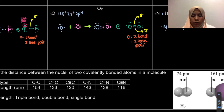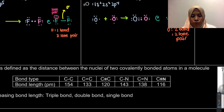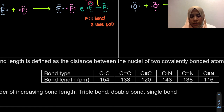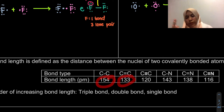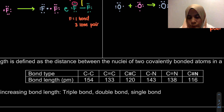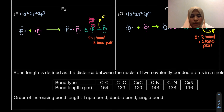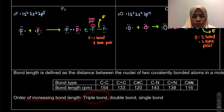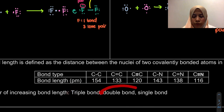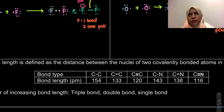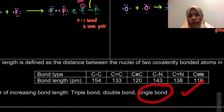For the carbon-carbon bond, single bond is 154 pm, double bond is 133 pm, and triple bond is 120 pm. So the bond length gets shorter as the number of bonds increases. The same trend applies to the carbon-nitrogen bond — from single to double to triple bond, the bond length decreases. So the order of increasing bond length is: triple bond is shortest, then double bond, and single bond has the longest bond length.